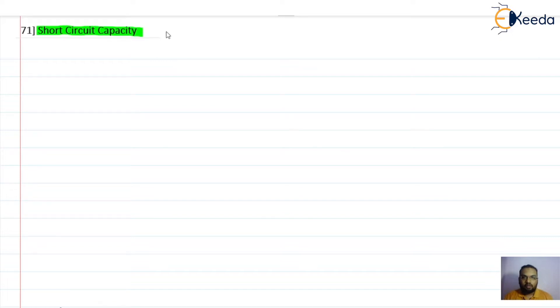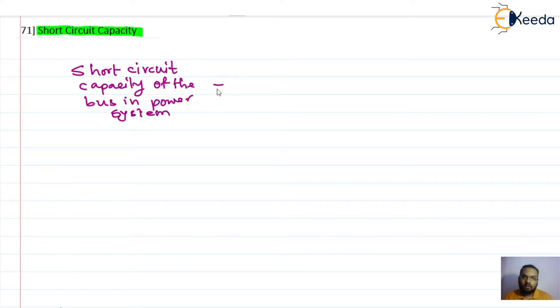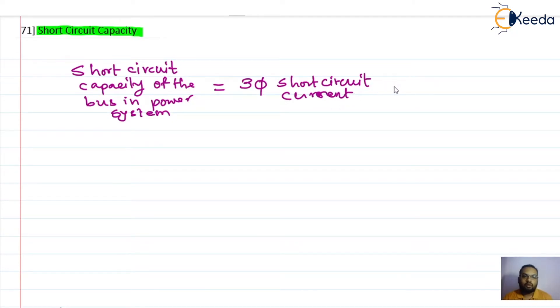Basically, short circuit capacity is used while deciding the sizing of the circuit breaker, but it can also be used to analyze voltage stability. The basic definition: the short circuit capacity of the bus in a power system is calculated as the three-phase short circuit current multiplied by the rated voltage of the bus.